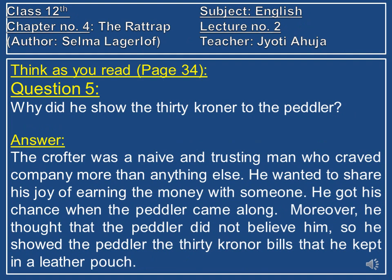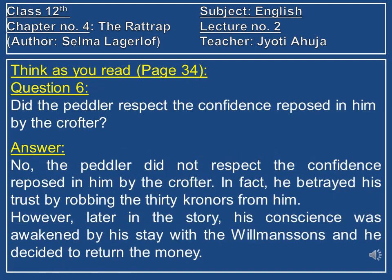Question number 5: why did he show the 30 kronor to the peddler? The crofter was a naive — meaning untrained and unsophisticated — and trusting man who craved company more than anything else. He wanted to share his joy of earning money and thought the peddler did not believe him, so he showed the 30 kronor bills kept in a leather pouch. Question number 6: did the peddler respect the confidence reposed in him? No. He betrayed the crofter's trust by robbing the 30 kronors. However, later in the story, his conscience was awakened by his stay with the Wilmansons and he decided to return the money.